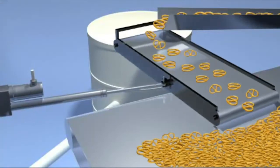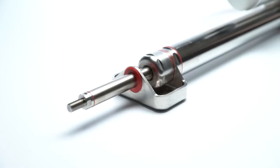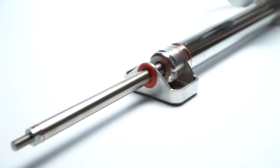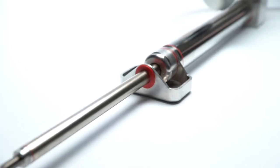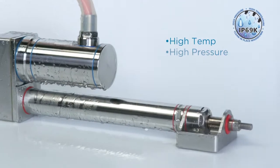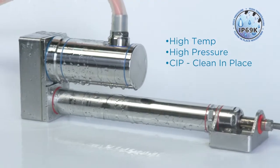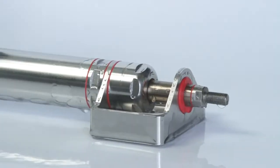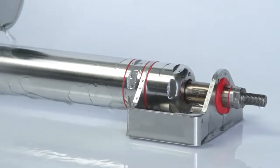All Series ECP Electric IP69K Cylinders provide a wide range of thrust and high-speed capabilities, making them suitable for a variety of applications where high-pressure and high-temperature washdown is required, and select models fulfill USDA certification requirements.